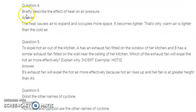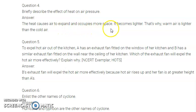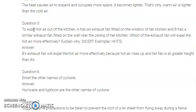Question number four: briefly describe the effect of heat on air pressure. Heat causes air to expand and it occupies more space. It becomes lighter. That is why warm air is lighter than cold air. Warm air expands and occupies more space, while cold air is heavier. This difference explains the relationship between heat and air pressure.